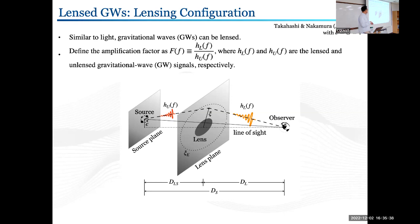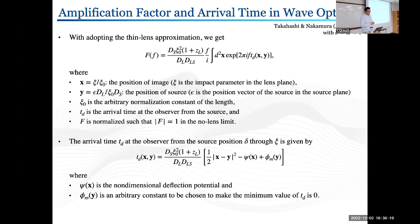This is somewhat simplified. Because we assume that the lens and source systems are very far away from us, we typically treat the lensing with the thin lens approximation — projecting the lens mass system onto a two-dimensional plane, and also assuming the source system is on a two-dimensional plane. With this configuration, we can compute the amplification factor big F and the arrival time of the lensed signals in wave optics.